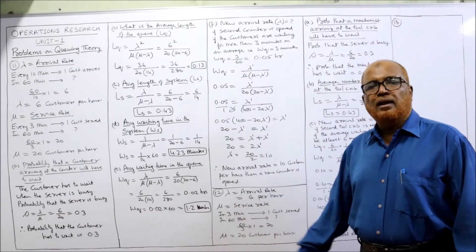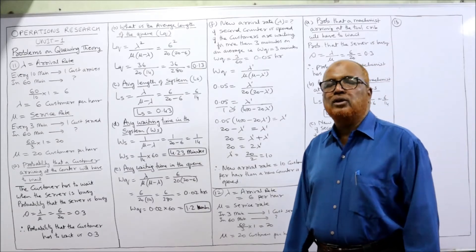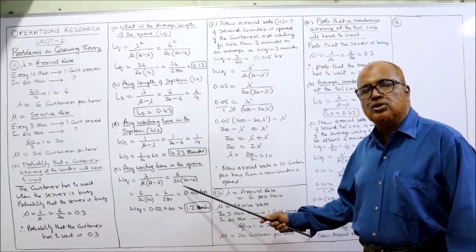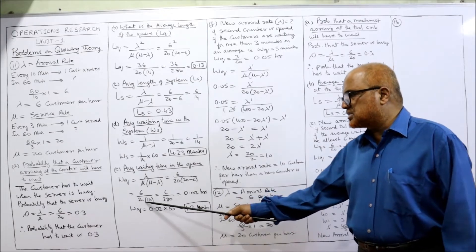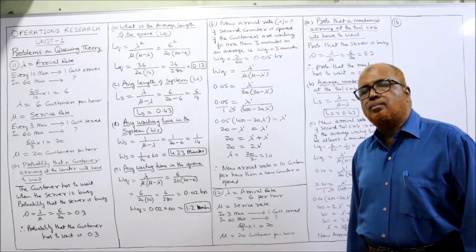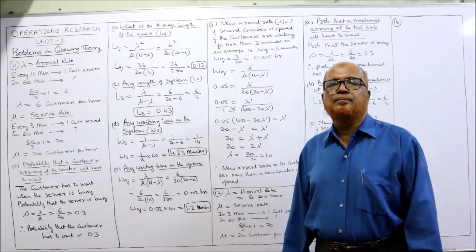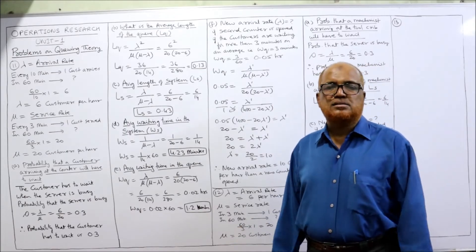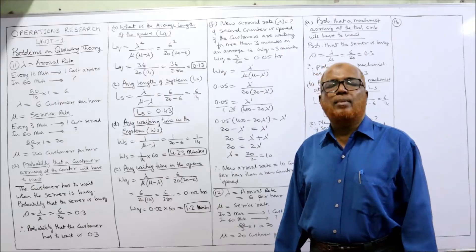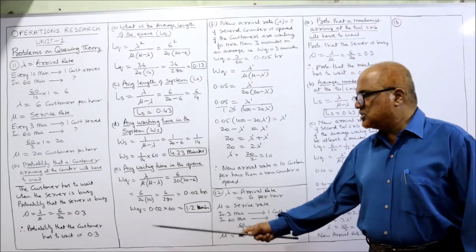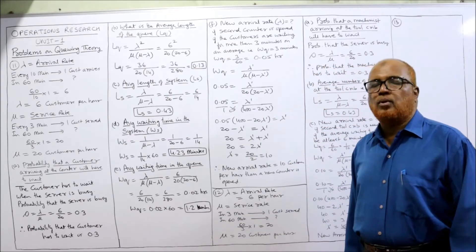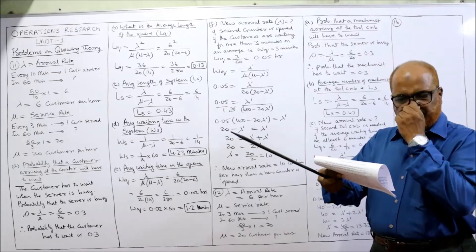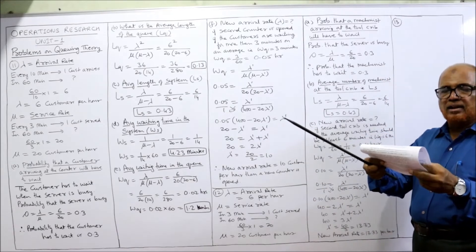Next: what is the average waiting time in the queue, WQ? The formula for WQ is lambda divided by mu times (mu minus lambda): 6 divided by 20 times (20 minus 6), so 6 divided by 280, which comes to 0.02 hours. Since the time is measured in hours, to convert to minutes multiply by 60: 0.02 times 60 gives 1.2 minutes.